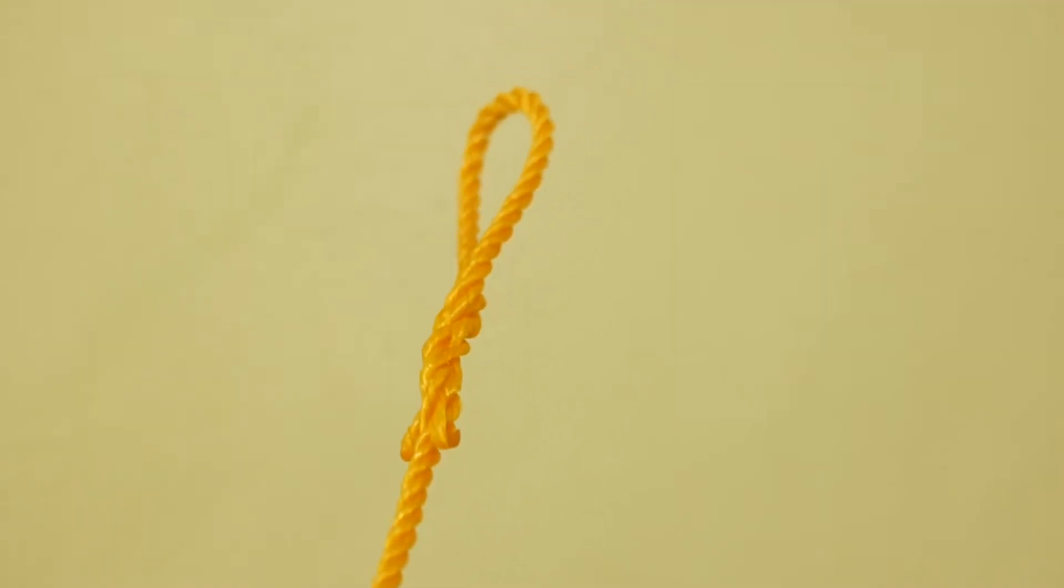The eye splice is used to create a permanent loop at the end of a rope. Decide how big your loop will be. Twist the body of the rope to create opening for the three strands.